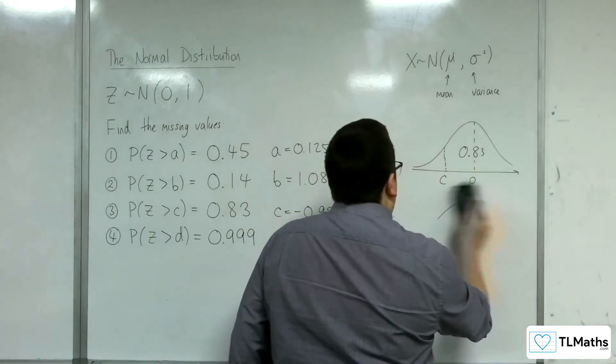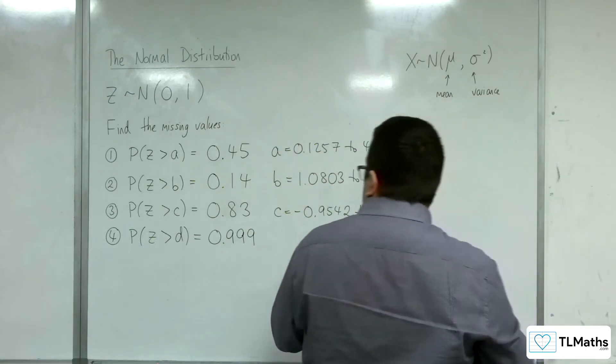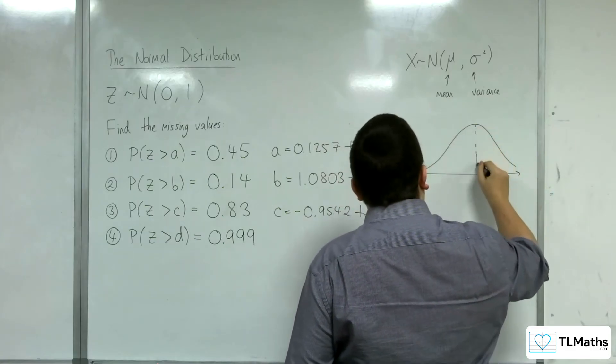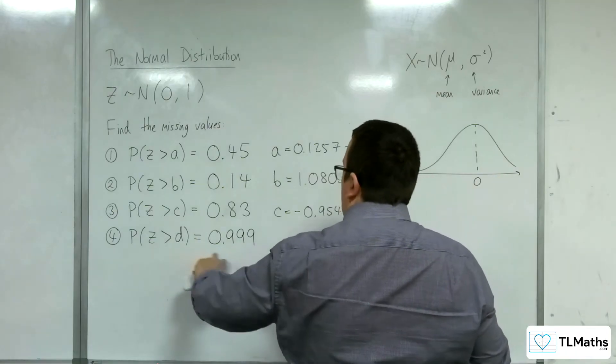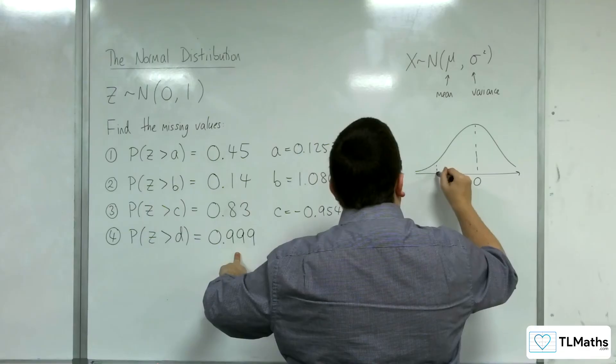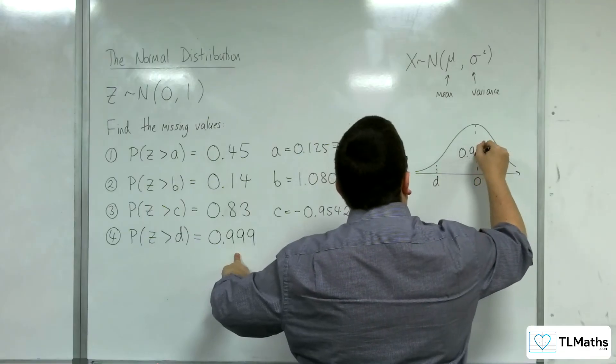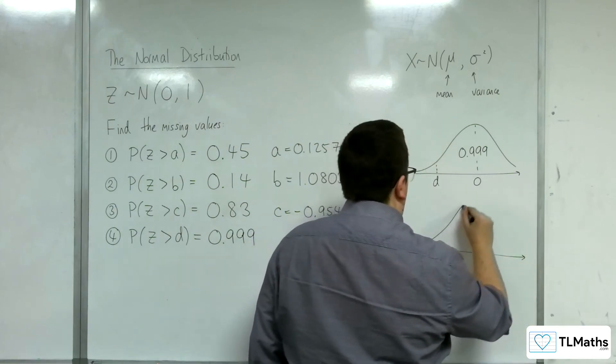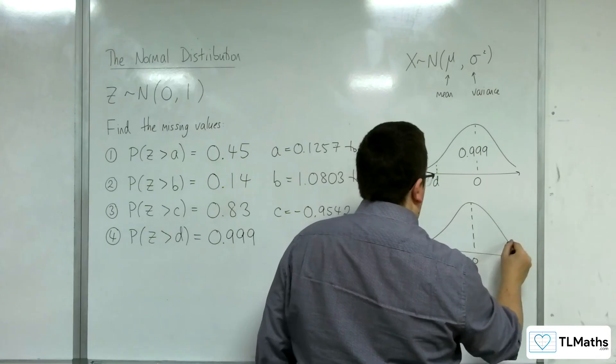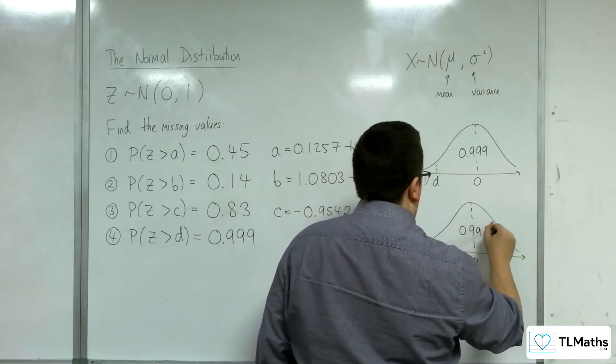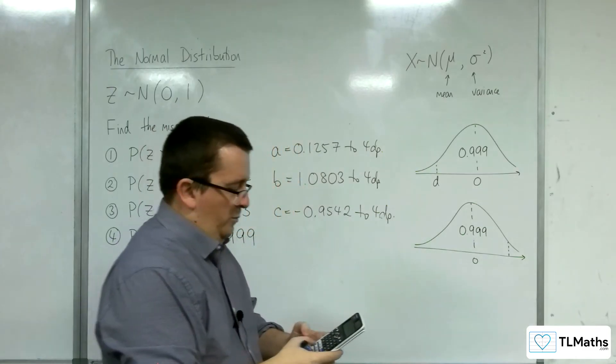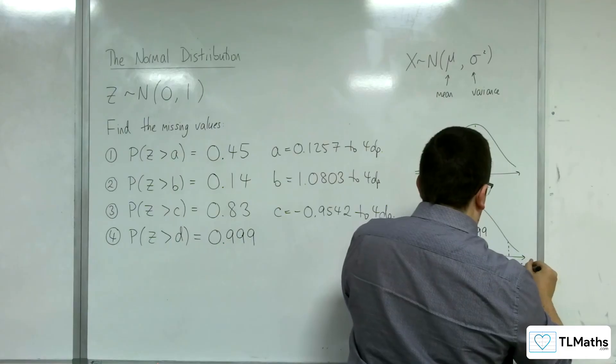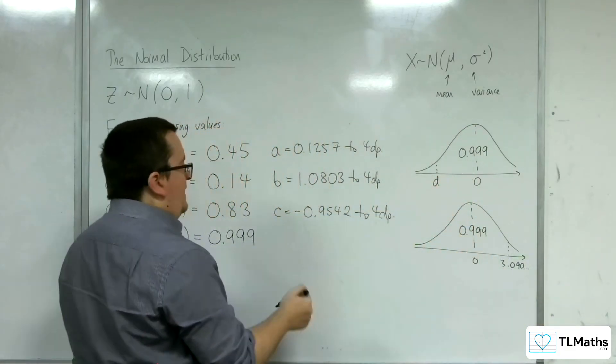For the last one, the area to the right of D is 0.999. Using the mirror image approach, I look up 0.999 on my calculator and get 3.090. So D must be the negative of that value.